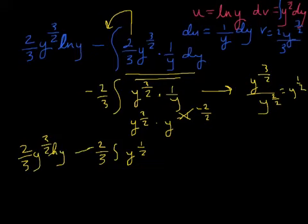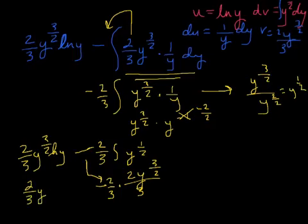So, anti-derivative. Add one to your exponent, you get y to the three-halves times two-thirds. And then you have times this negative two-thirds. And two-thirds y to the three-halves times the natural log of y. And the rest is just clean up.